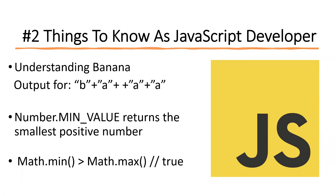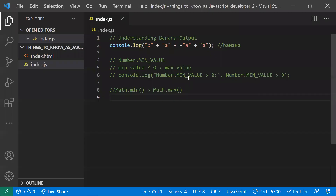In this video, let's learn a few points about JavaScript. I'll be covering why we get 'banana' as output for a certain input, what Number.MIN_VALUE does, and why Math.min is greater than Math.max. Let's start with understanding the 'banana' output whenever we give the input like this.